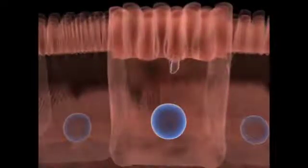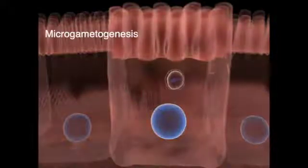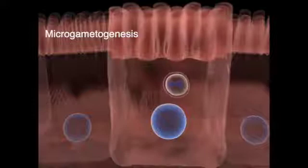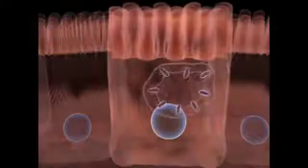After several schizogonic cycles, gametogenesis takes place. Male gametes are called microgametes and are produced by schizogony, but follow a different pathway, resulting in flagellated cells.